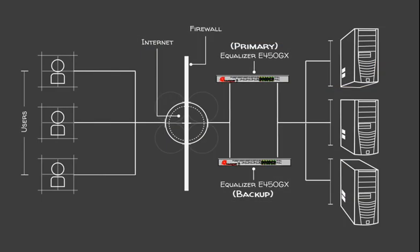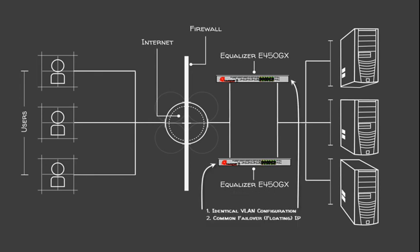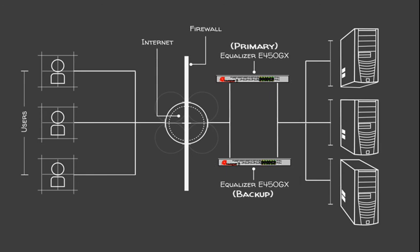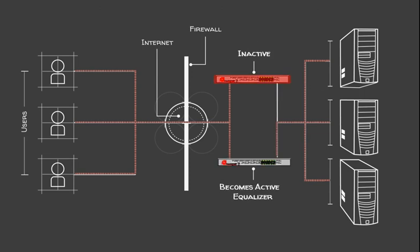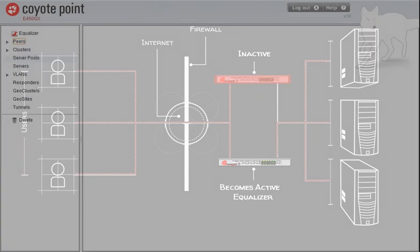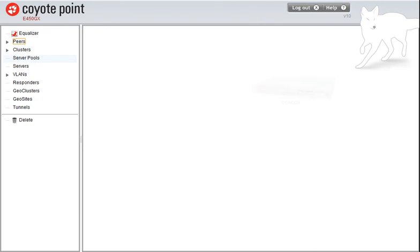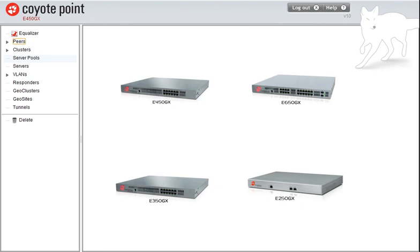Let's summarize what we did. We installed two Coyote Point Equalizer E450GX units and designated one as the primary and the other as the backup. We configured the two equalizers with identical VLAN failover configurations and assigned a common failover IP address. We've created peer definitions on each equalizer and enabled failover options. The equalizers will now continually check the health of each other through heartbeat probes. When the backup determines that heartbeat probes have stopped, it takes over as the active equalizer and processes all requests. In this video, we showed you the basics of setting up an active-passive failover configuration that will work with any matched pair of Coyote Point Equalizers.